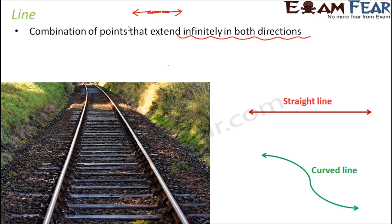A line is normally represented with a name. Let's say the straight line is named AB. We write it as AB and over AB we give a symbol with arrows on both ends, which shows that this is a line.